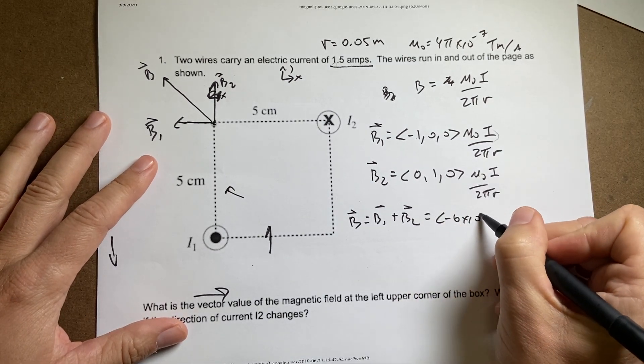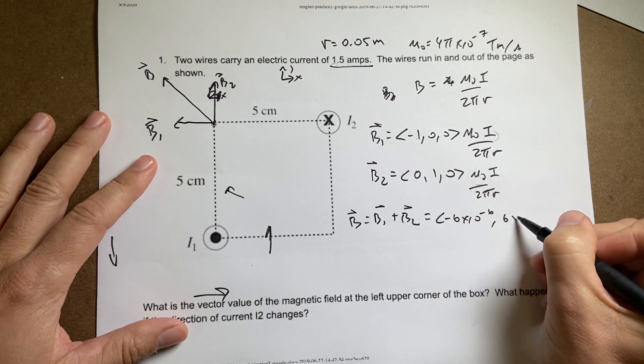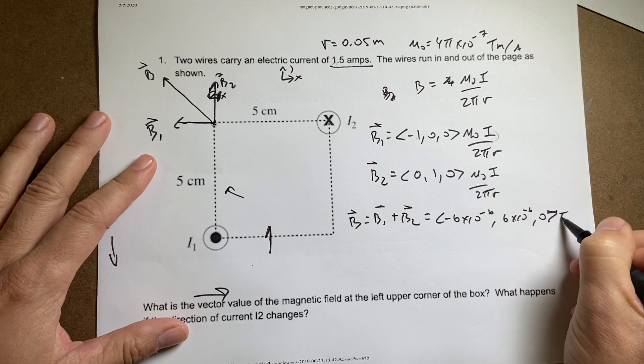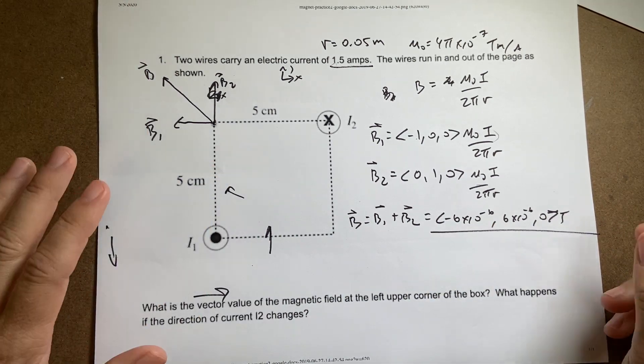Negative 6 times 10 to the negative 6th. 6 times 10 to the negative 6th. 0 tesla. So that's the magnetic field. It's going up that way.